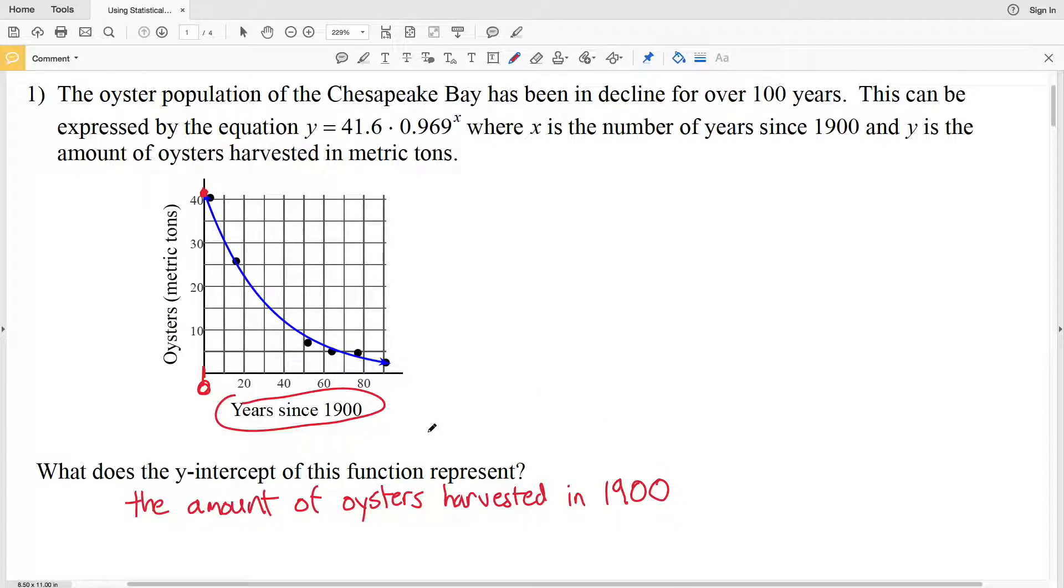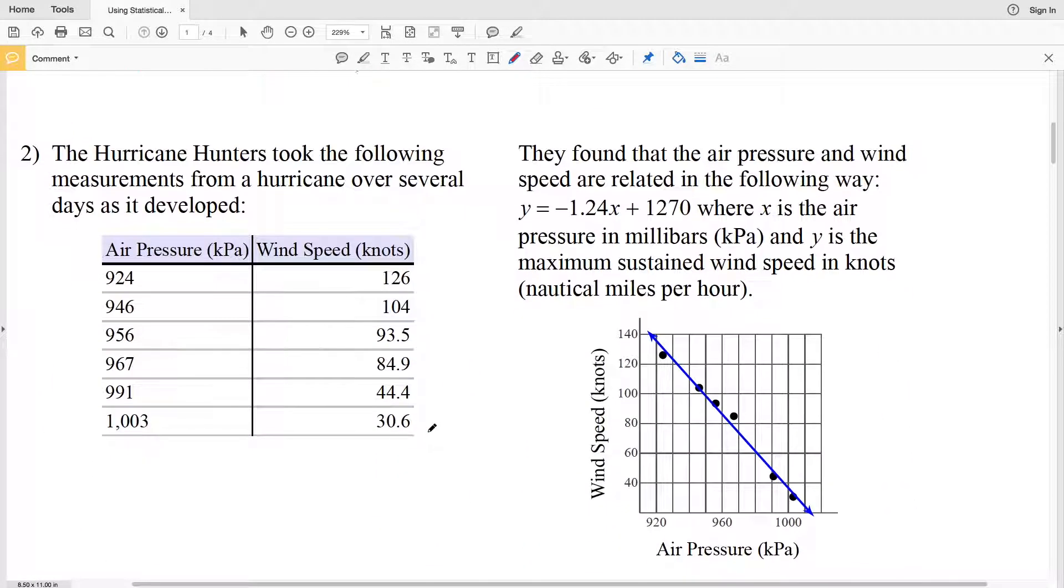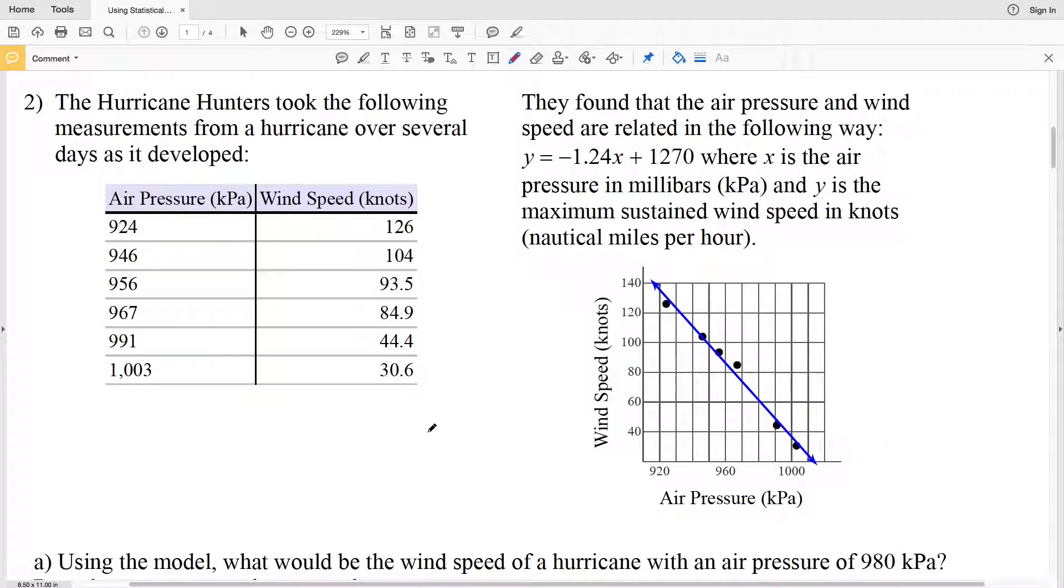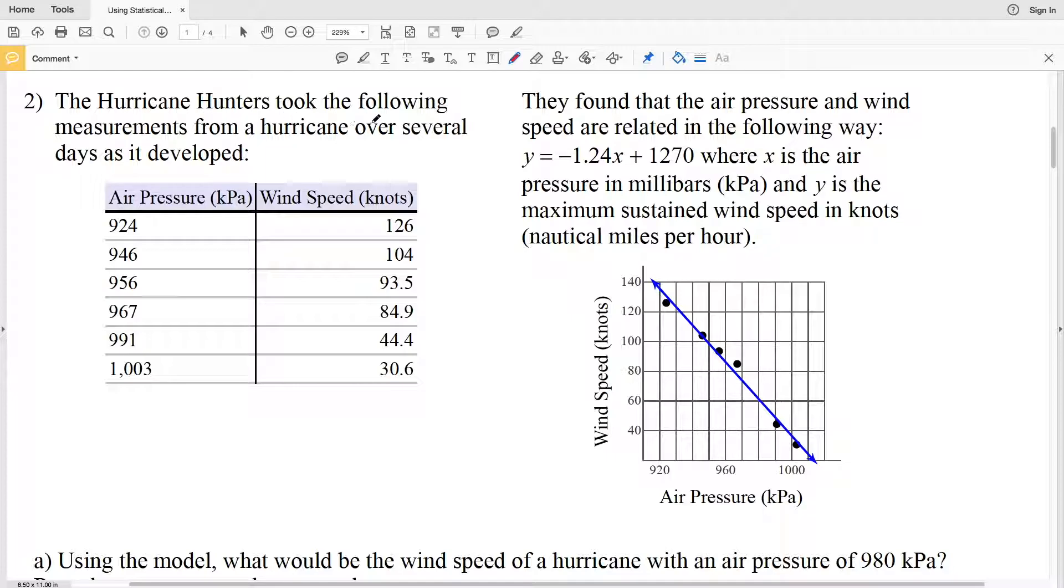Now we're moving on to number two with a different set of data. It says the hurricane hunters took the following measurements from a hurricane over several days as it developed. We have the air pressure and the wind speed. They found that the air pressure and wind speed are related in the following way, so they put a line of best fit to this table and that line of best fit is y equals negative 1.24X plus 1270.